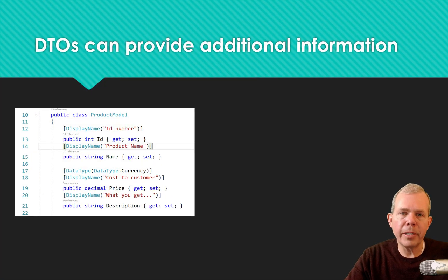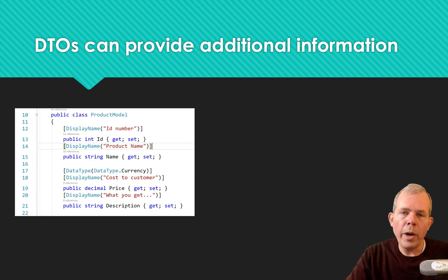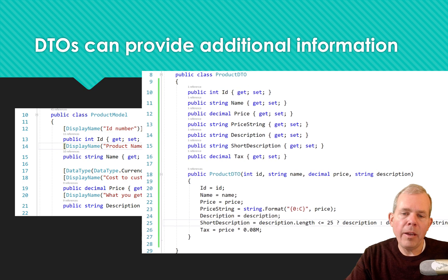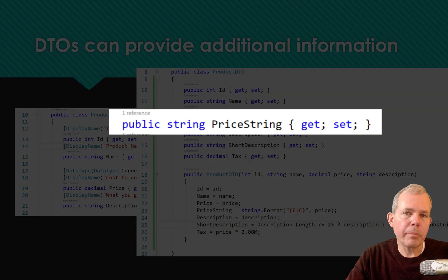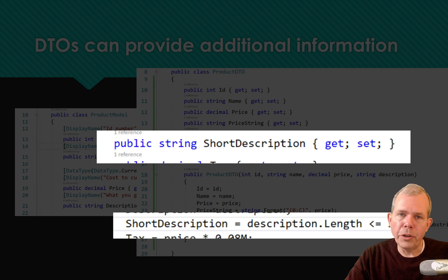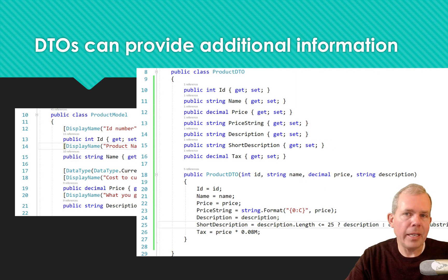DTOs can also provide additional information. In this example, we have a product with properties: name, cost, price, and description. What if we wanted to enhance that data? We could take the price and put it into a special format, such as currency. A short description is not in the original class, but we can include it for the front end — for example, snipping the first 25 characters of the description and sending those as the short description.